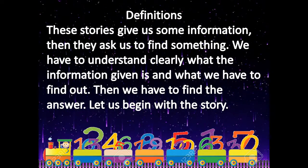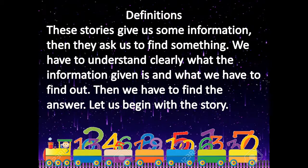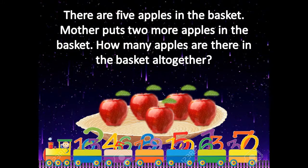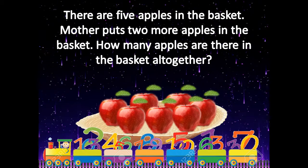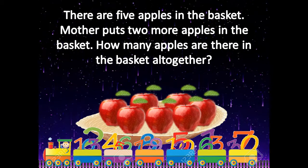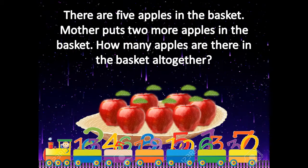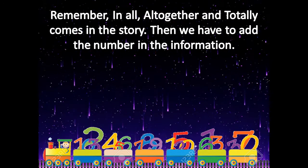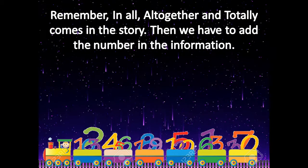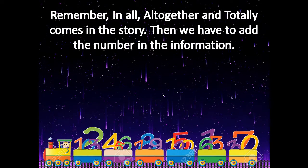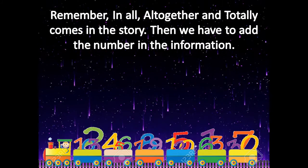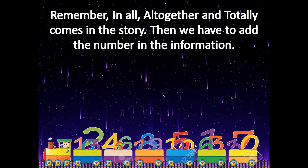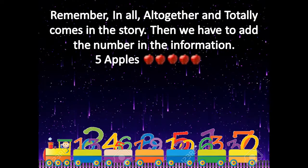Let us begin with the story. There are five apples in the basket. Mother puts two more apples in the basket. How many apples are there in the basket altogether? Remember, when 'altogether' or 'in all' or 'totally' appears in the story, we have to add. Five apples plus two apples gives you seven apples altogether.